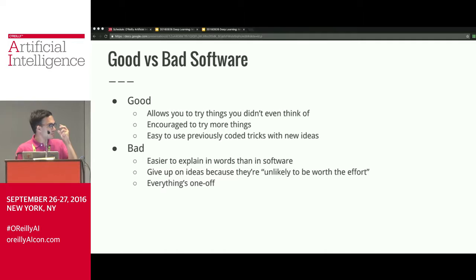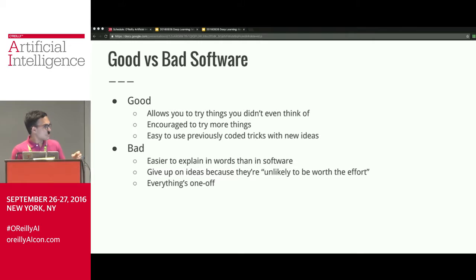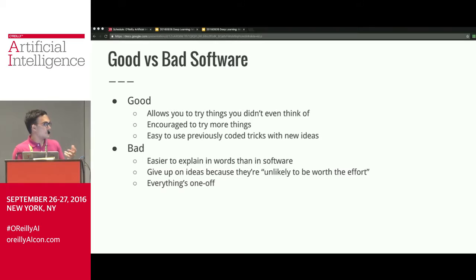A telltale sign of bad software is when it's significantly easier to explain something in words than in code. 'Just put this connection here' or 'add this to the cost' seems simple, but then you need to pass it through three different layers of code. Good software makes it really easy to try all combinations of everything, and you're encouraged to try more things. Bad software leads to giving up on ideas because they seem unlikely to be worth the effort, or waiting for someone else to do it — and when everyone thinks that, no one does the thing.